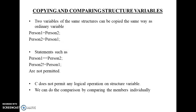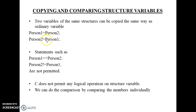Copy operation: two variables of the same structure can be copied the same way as ordinary variables. If I have two structure variables, person one and person two, the value of person two is assigned to person one, or the value of person one is assigned to person two — this copy operation is the same as an ordinary variable copy operation.